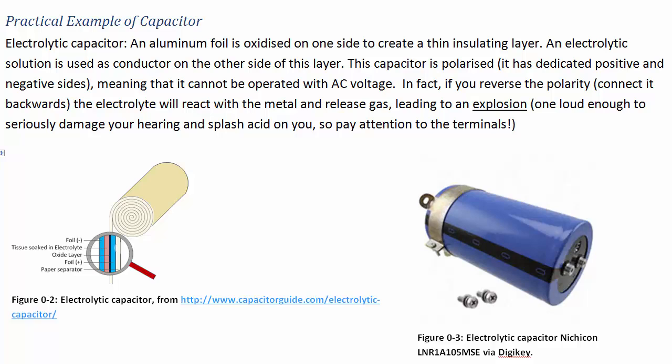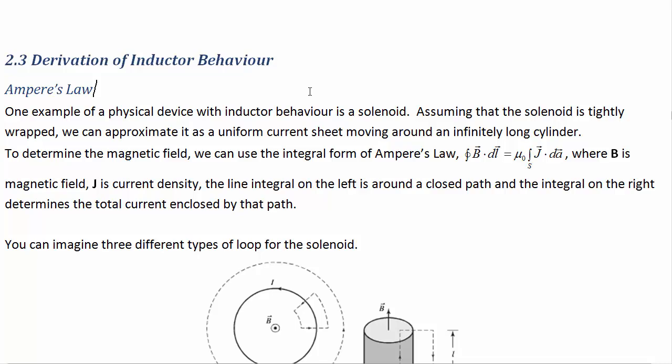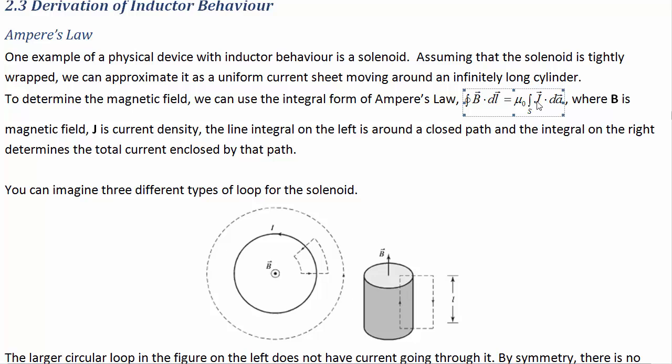Now let's start talking about inductors. Inductors are kind of the opposite of capacitors in many ways, though they share similarities. While resistors are energy dissipation devices, inductors are energy storage devices like capacitors. Ampere's law — which you knew from first year — says that the line integral of the magnetic field around a closed path is equal to mu-naught times the current enclosed by that path, expressed as mu-naught times the surface integral of current density dotted with the area vector.